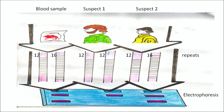We have also shown some repeat sequences. In the first case there is one set of 12 repeat sequences and one set of 16 repeat sequences. In suspect 1 there are only 12 and 12 repeat sequences. In the case of the actual person who committed the crime, the DNA has 12 repeat sequences and 16 repeat sequences, which is similar to what was obtained at the crime scene.